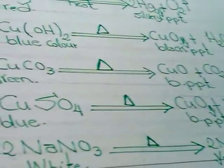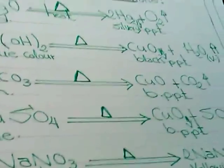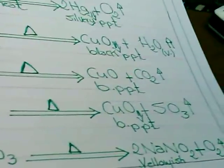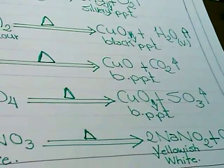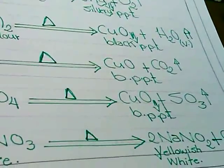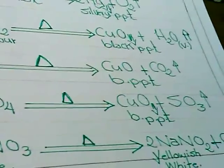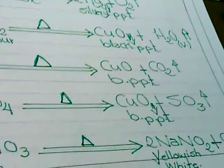Copper sulfate has a blue color. It can be decomposed by heat to get copper oxide, black PPT, and SO3 evolves. SO3 is called sulfur trioxide gas.